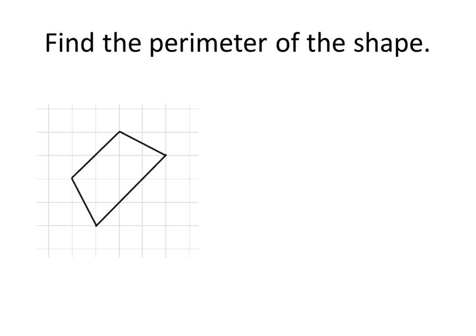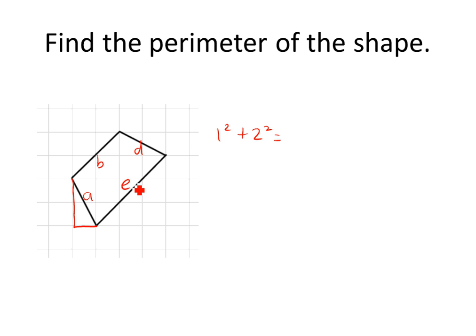What if we try something a little bit harder? We don't have horizontal and vertical lines here, so we're going to have to create right triangles and use the Pythagorean theorem to find the side lengths. Starting with the first side: 1 squared plus 2 squared equals A squared.